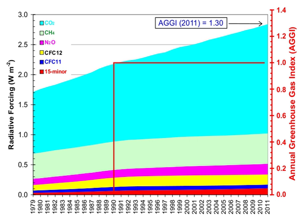The major atmospheric constituents — nitrogen, oxygen, and argon — are not greenhouse gases because molecules containing two atoms of the same element, such as N2 and O2, have no net change in the distribution of their electrical charges when they vibrate, and monatomic gases such as argon do not have vibrational modes. Hence they are almost totally unaffected by infrared radiation.